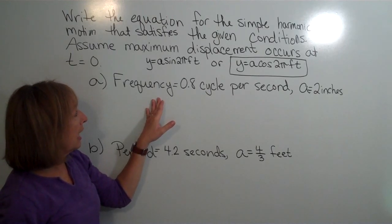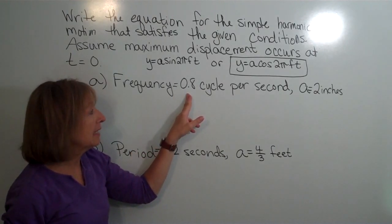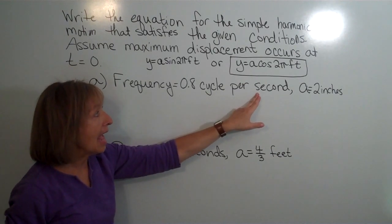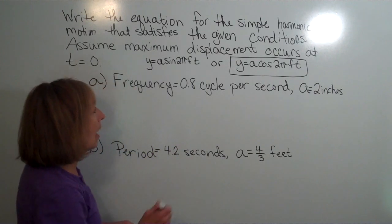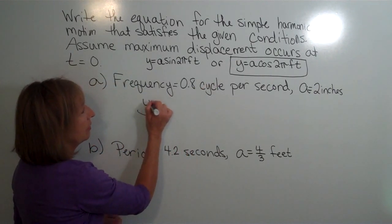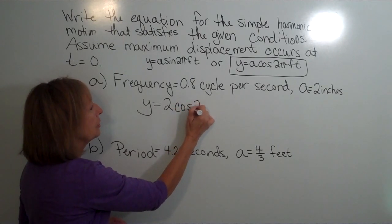So when I look at this first example, it's telling me that the frequency is 0.8 cycles per second, and that my maximum displacement is 2 inches. So I'm just going to fit those values into the equation.